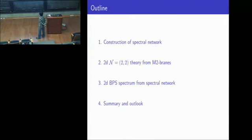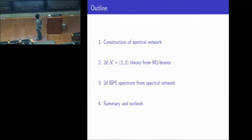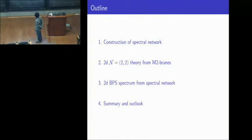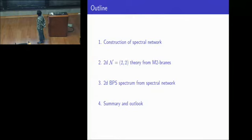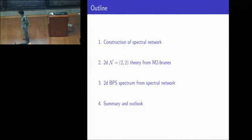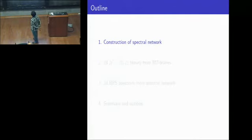Here is the outline of today's talk. First, I'll review how to construct a spectral network that will be used to describe the 2D BPS spectrum of our interest. Then I will describe the brane configuration that will give us the 2D N=(2,2) theory, and how this brane configuration plus the spectral network can give us the 2D BPS spectrum. I'll describe what our claim is, and in the third part of the talk, I will use the spectral network to find the 2D BPS spectrum and use it as evidence for our claim. Let's start with building spectral networks.